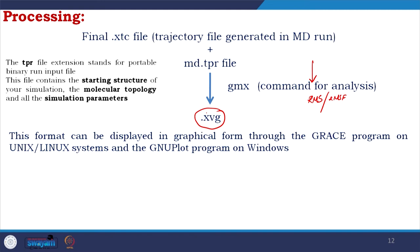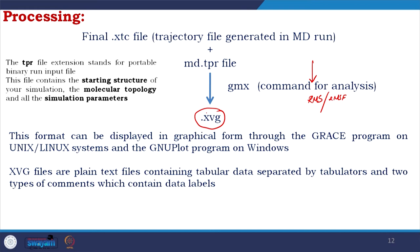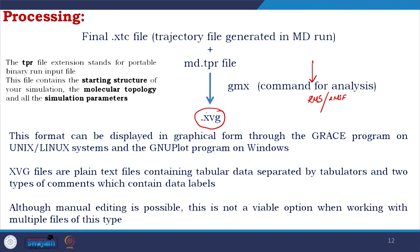If you are not on a Unix or Linux system and are using Windows, you use the gnuplot program. The .xvg files are plain text files containing tabular data separated by tabs and two types of comments that contain data labels. Because it is a plain text file, you could do manual editing directly. But when you run the entire simulation, the file would be huge, so it would not be realistic to edit it manually — you should take the help of system automation and programming modules.